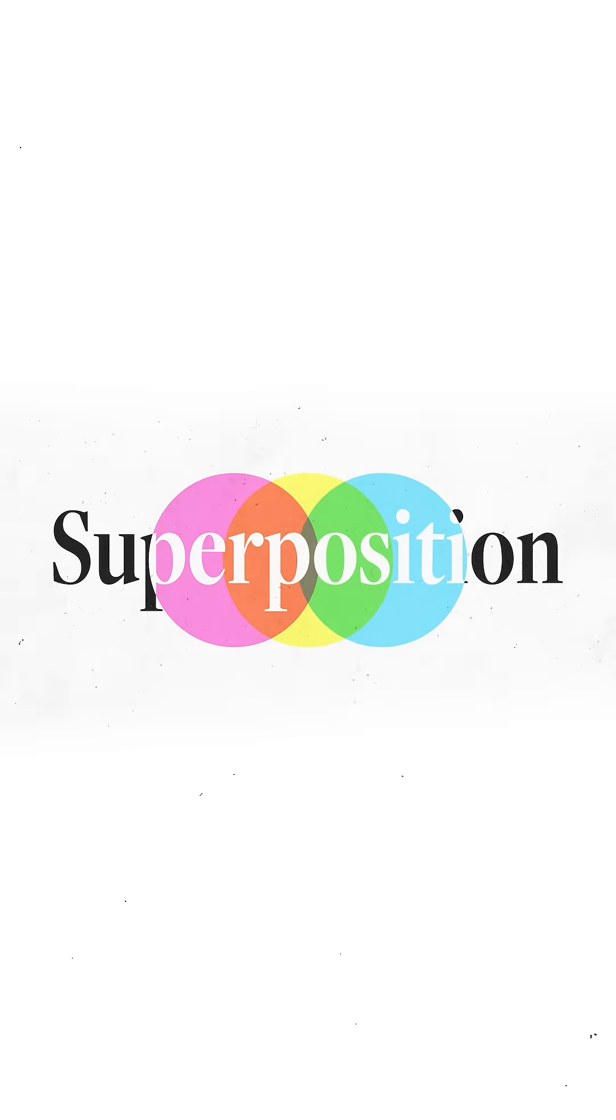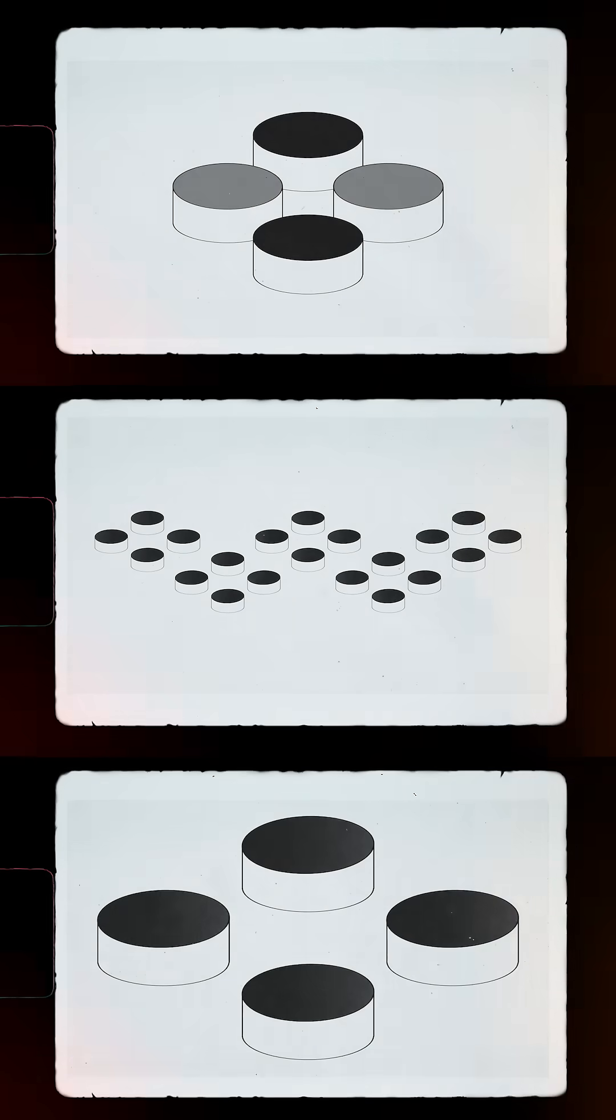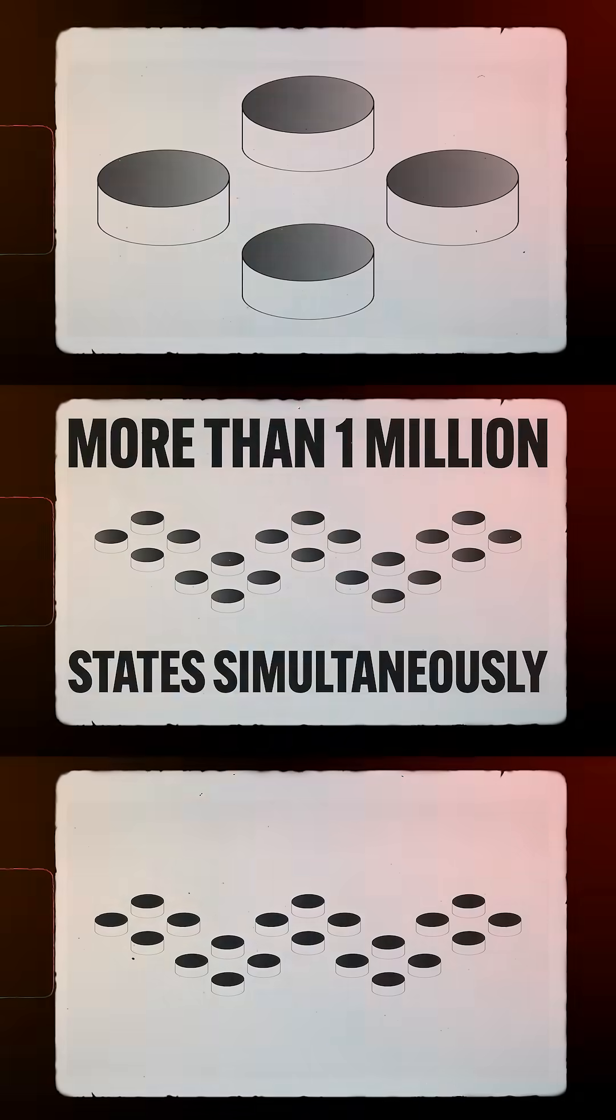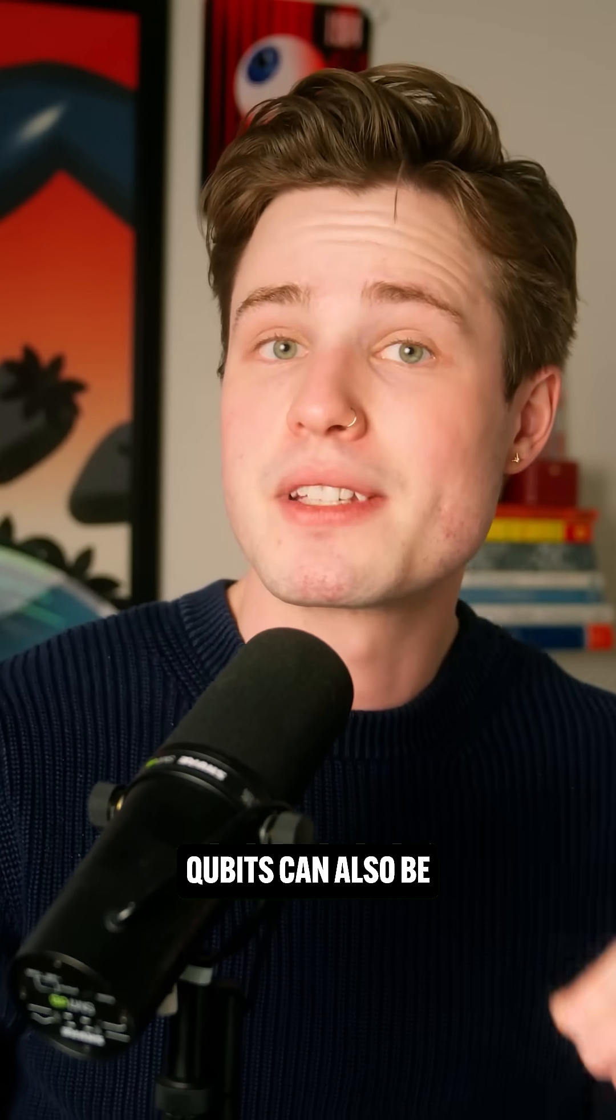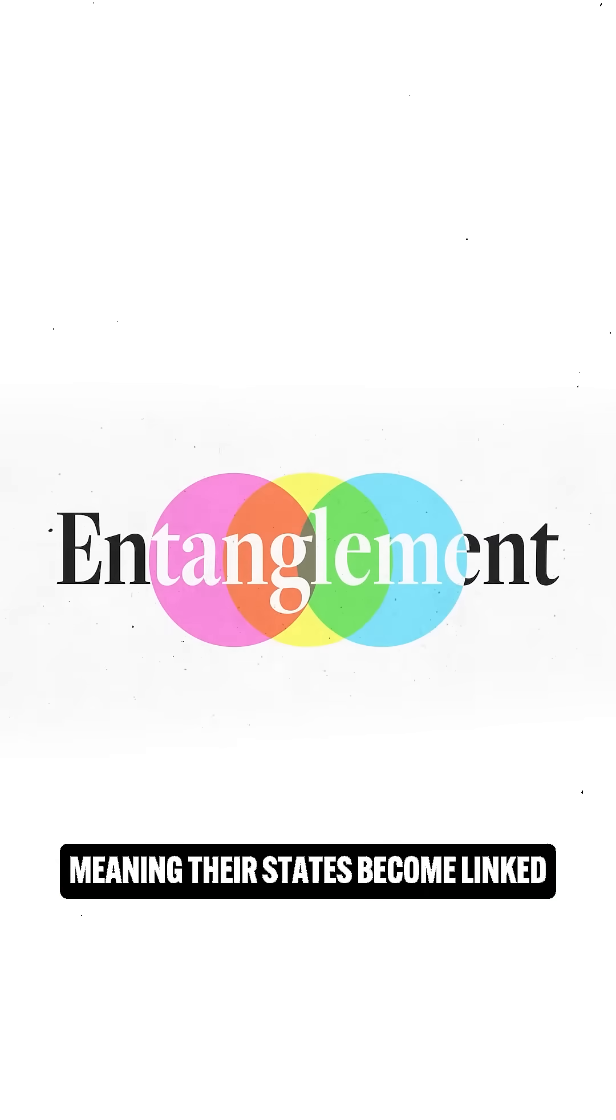This property called superposition allows them to explore multiple solutions simultaneously. And here's where it gets even stranger. Qubits can also be entangled, meaning their states become linked no matter how far apart they are.